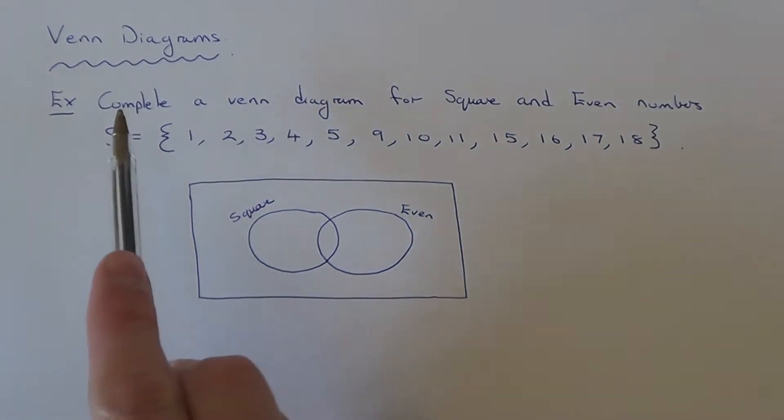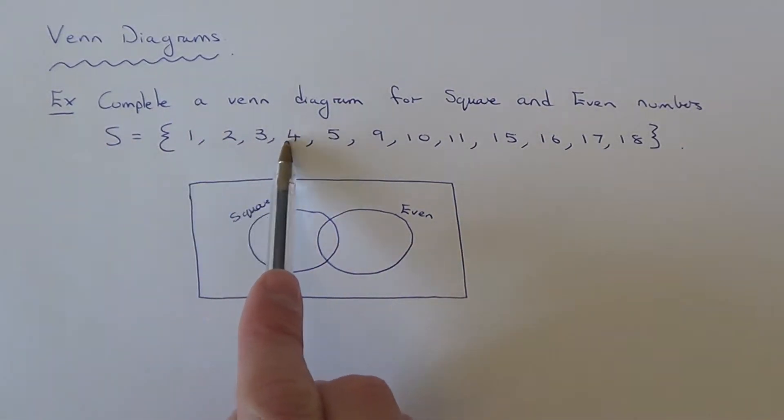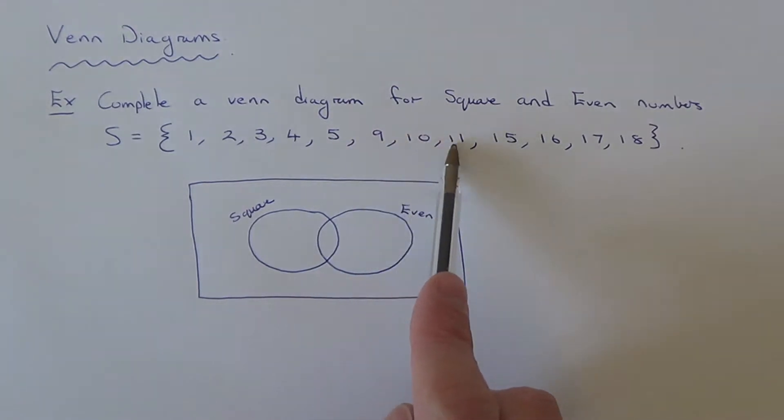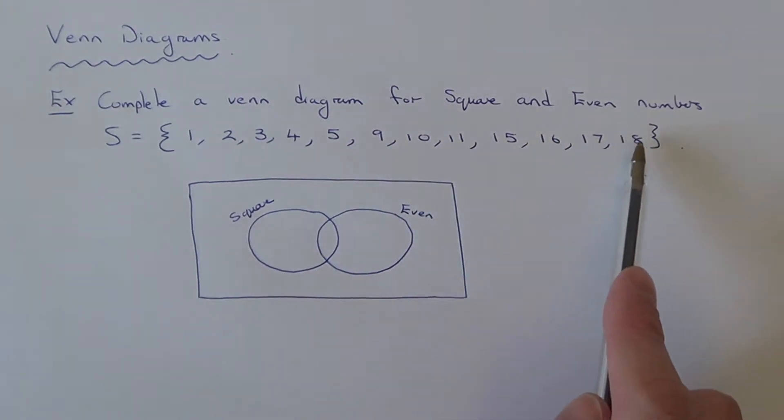And the numbers that we have in our set are 1, 2, 3, 4, 5, 9, 10, 11, 15, 16, 17, 18. So I'm going to put these numbers into the Venn diagram below.